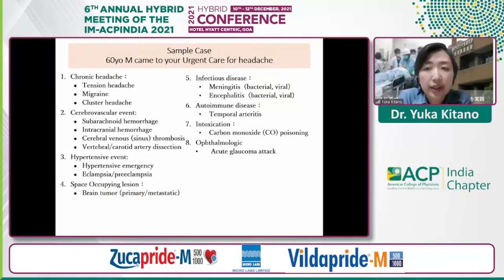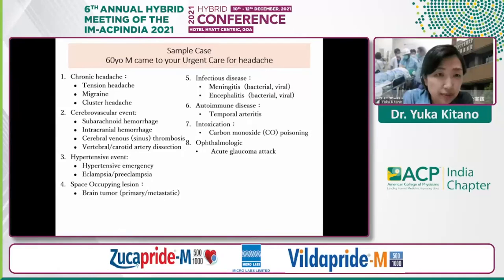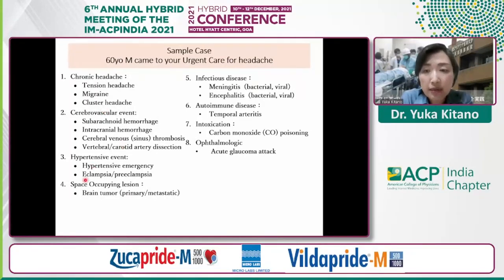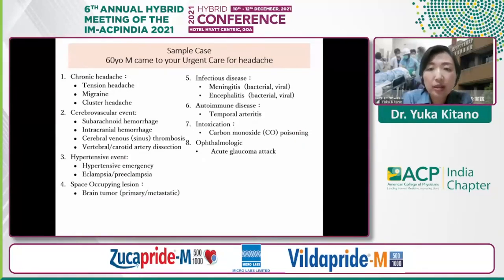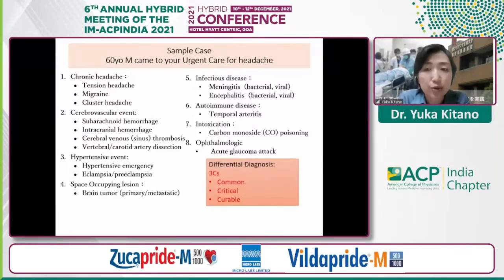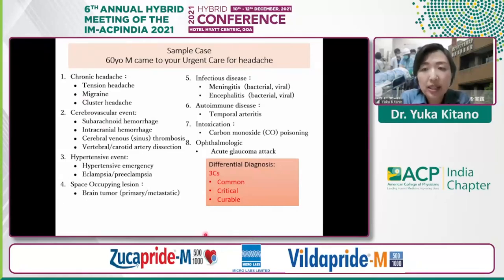The differential diagnosis for headache is broad. A thorough differential list includes chronic headache syndromes, several vascular events especially subarachnoid hemorrhage, hypertensive emergency, brain tumor, meningitis, and less common ones students miss: temporal arteritis, carbon monoxide poisoning, or glaucoma attack. When thinking of differential diagnosis, it is important to categorize them as the three C's: common, critical, and curable. The most common are primary headache categories, but critical and curable — or at least interventionable — are subarachnoid hemorrhage and meningitis.